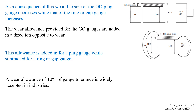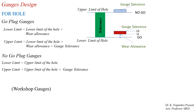Due to this wear, the size of the go plug gauge decreases, while the size of the go snap gauge, ring gauge, or go gap gauge increases. The wear allowance is provided for the go gauges and is added in a direction opposite to wear. For a plug gauge, wear allowance is added, while for a snap gauge, ring gauge, or gap gauge, wear allowance is subtracted. In general, the amount of wear allowance is 10% of the gauge tolerance.